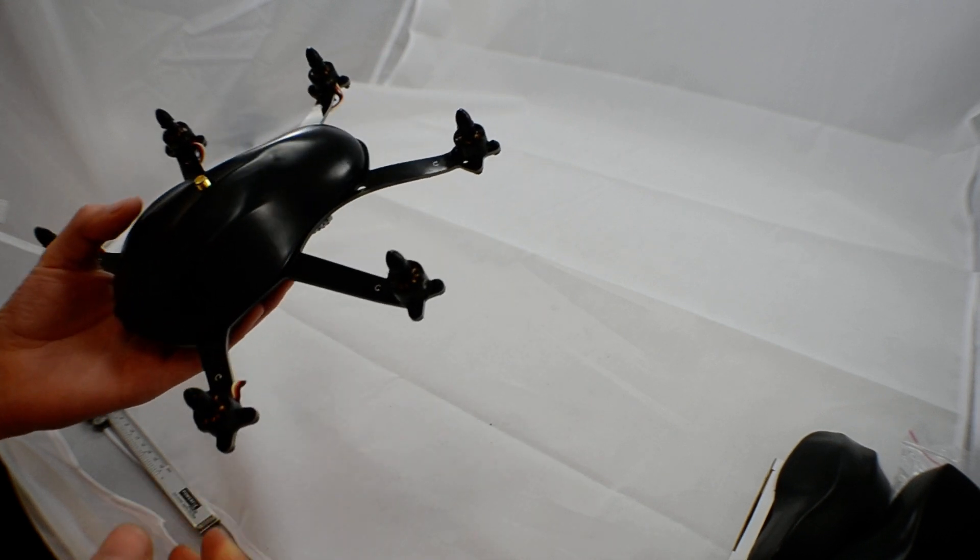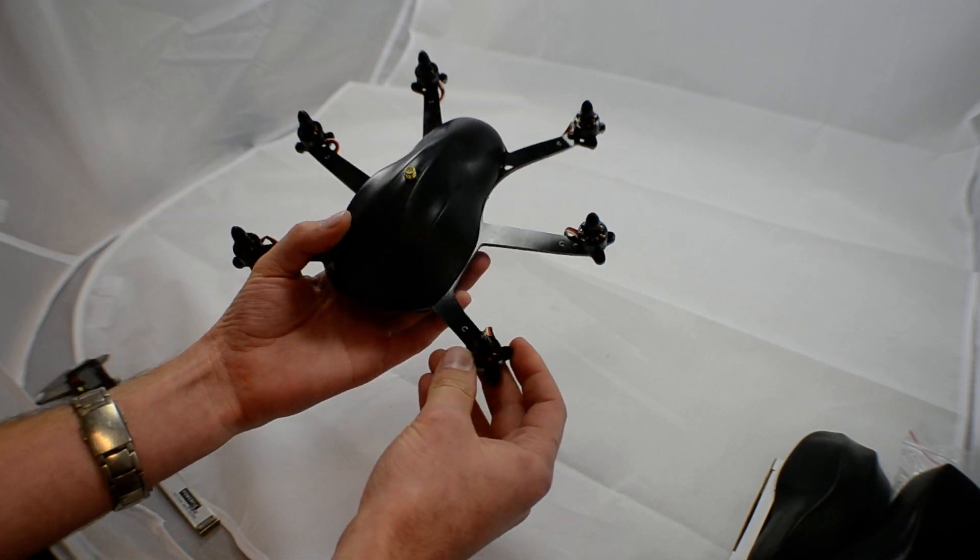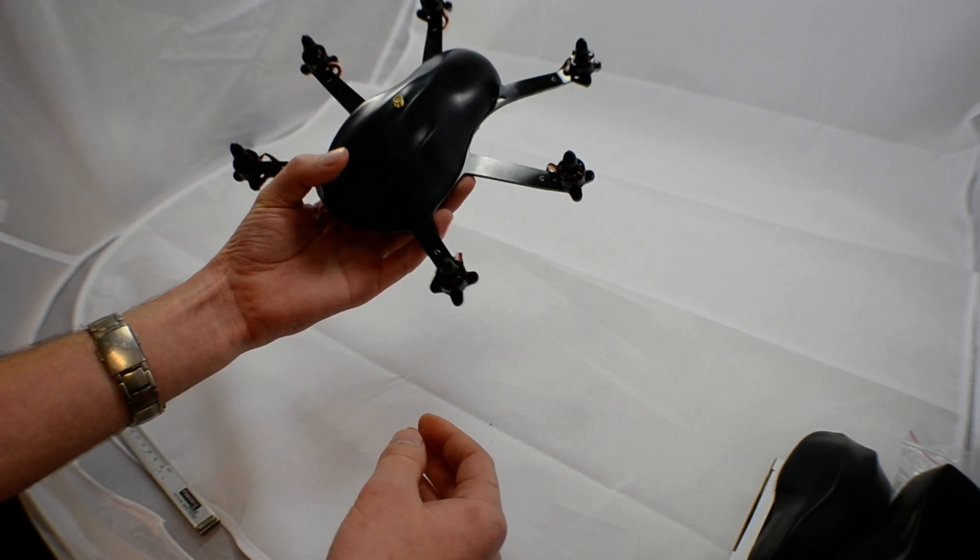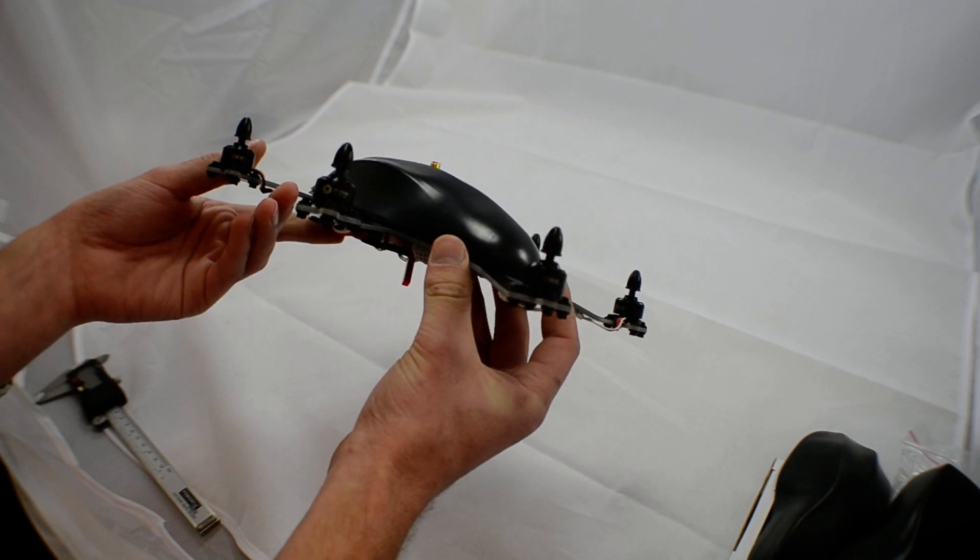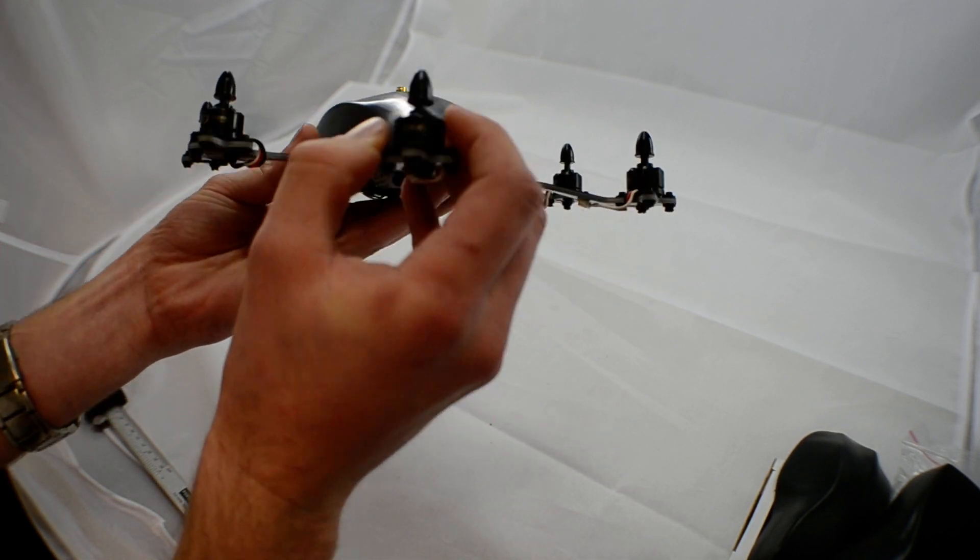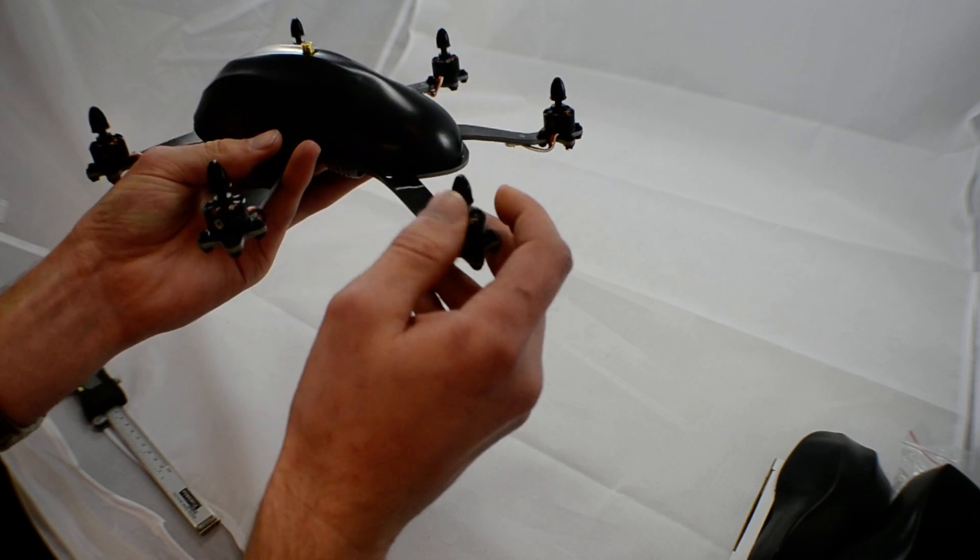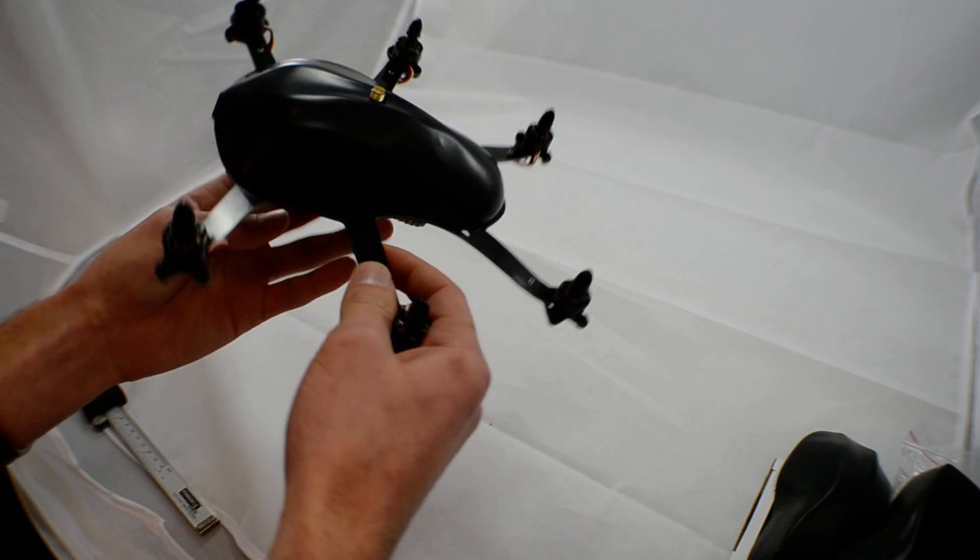First thing you notice is obviously a hexacopter which is quite nice to see in the mini quad format. The TBS motors are the 2100kV and they feel really nice. Really nice quality motor on there.